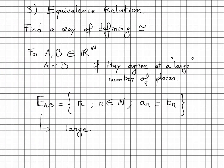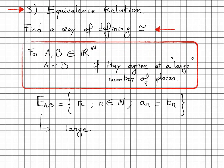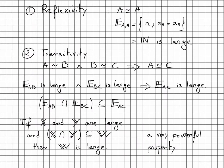Our next step is to define an equivalence relation. So that for A and B sequences in R^N, we can write A equivalent to B if they agree at a large number of places. Of course, we need to specify what we mean by large. It is helpful to define the set E_AB as a set of n integers such that A_n equals B_n. What we need is a way to decide if this set can be defined or classified as large.